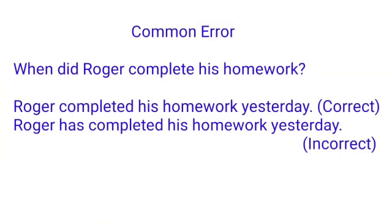For example, 'When did Roger complete his homework?' — 'Roger completed his homework yesterday.' Now compare: 'Roger has completed his homework yesterday' is actually unacceptable — it is incorrect. The correct form is 'Roger completed his homework yesterday.' So remember, whenever you want to specify a definite time you have to use simple past. Whenever you want to highlight the result or action, you have to use present perfect.